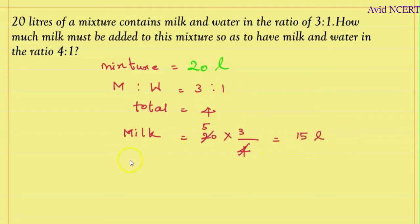To find the water quantity, it equals the total amount of mixture (20) times the part of water (1) divided by the total parts (4). So 5 times 4 is 20, and 5 times 1 is 5, so the water is 5 liters.